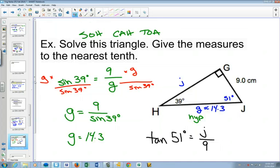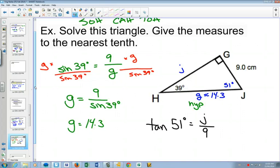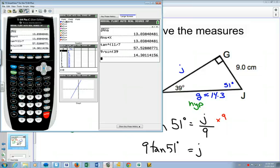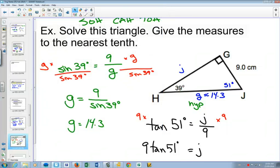So then I only have to do one thing mathematically to get that J by itself, which is multiply by 9. 9 tan 51. 11.1 centimeters.